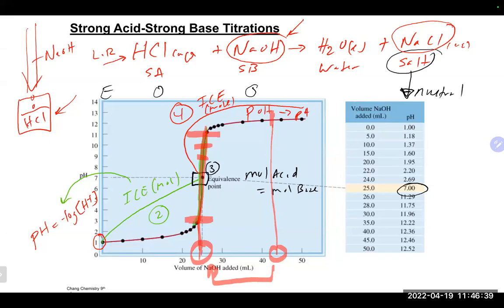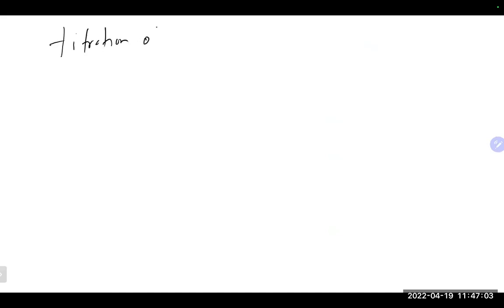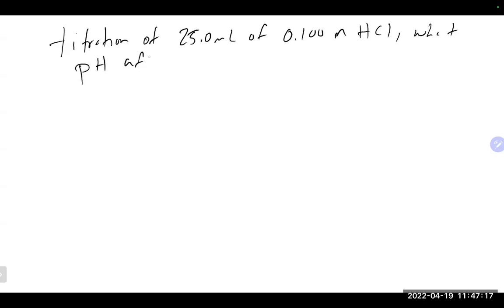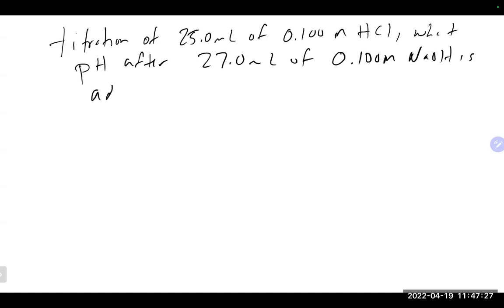Any questions on what we covered last time? Let's try a practice problem. We have a titration of 25 mL of 0.1 M hydrochloric acid. What is the pH after 27 mL of 0.1 M sodium hydroxide is added? Take a couple of minutes to work it out.